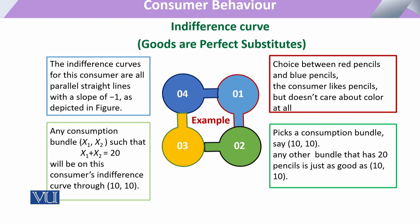Now, to draw the indifference curve, consider the example of red and blue pencils. If a consumer is taking 10 units of blue and 10 units of red pencils, that is one bundle giving him a total of 20 pencils. Now if we give him another bundle where he has 5 red and 15 blue pencils, or 15 red and 5 blue pencils, it makes no difference to the consumer because the total number of pencils remains 20.